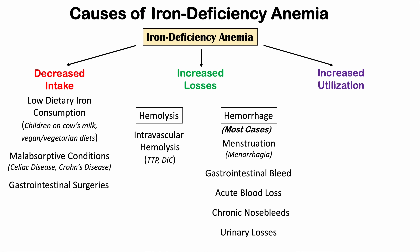The last category is increased utilization. Although a patient may be getting enough iron in their diet and absorbing it properly, they may need more than they're bringing in. Pregnancy is one such case — because the infant also requires iron, the mother needs more than usual and depletes iron stores faster. Growth and development in young children and adolescents also increases iron requirements, which is why young children are at increased risk for iron deficiency anemia.